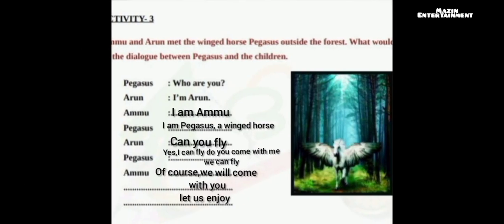Activity 3: Ammu and Arun met the winged horse Pegasus outside the forest. What was the dialogue between Pegasus and the children? Pegasus: Who are you? Arun: I am Arun. Ammu: I am Ammu. Pegasus: A winged horse. Arun: Can you fly, Pegasus? Pegasus: Yes, I can fly. Do you come with me? We can fly! Ammu: Of course, we will come with you. Let us enjoy!